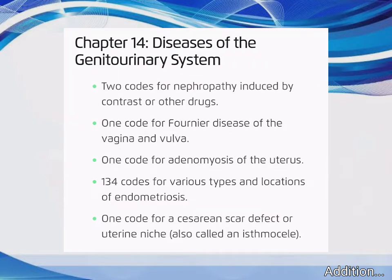Chapter 14 – Diseases of the Genitourinary System: 2 codes for Nephropathy Induced by Contrast or Other Drugs, 1 code for Fournier Disease of the Vagina and Vulva, 1 code for Adenomyosis of the Uterus, 134 codes for Various Types and Locations of Endometriosis, and 1 code for a Caesarean Scar Defect or Uterine Niche (also called an Isthmocele).